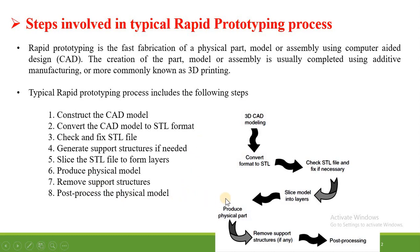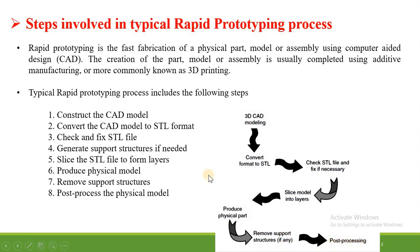All these steps are shown diagrammatically: 3D model creation, conversion into STL file format, checking the STL file and fixing problems, slicing the model, producing the physical object using a 3D printer, removing the support structure, and finally cleaning and all other post-processing activities.